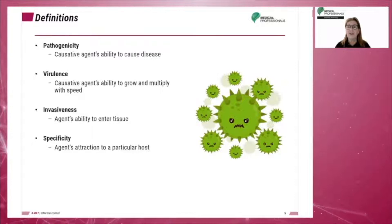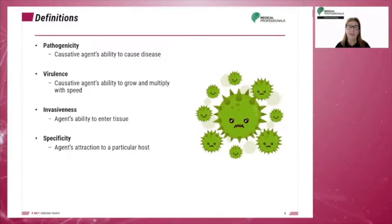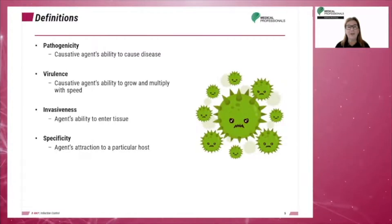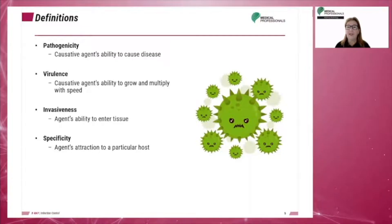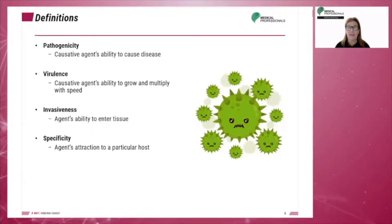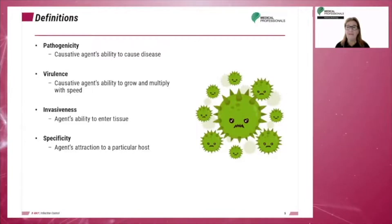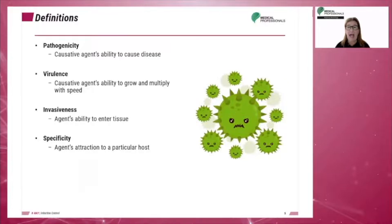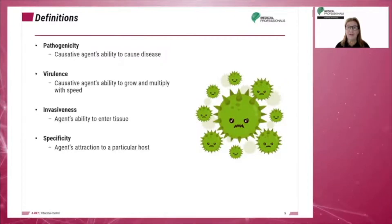Virulence is the causative agent's ability to grow and multiply. A highly virulent disease is very dangerous. Invasiveness is the agent's ability to penetrate tissue and cause an infection. If the disease is highly invasive, it can be more dangerous.